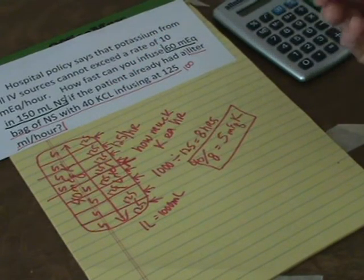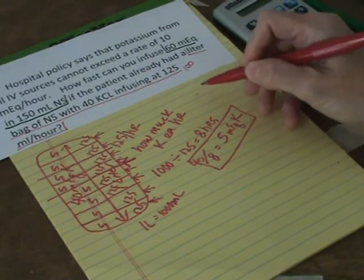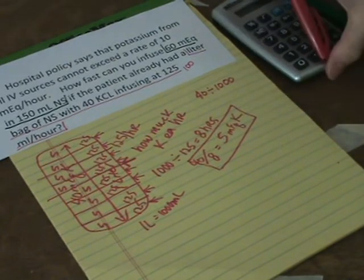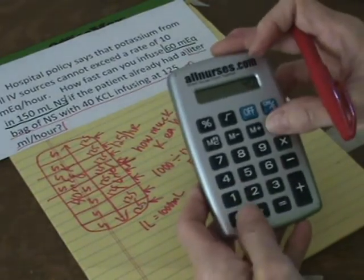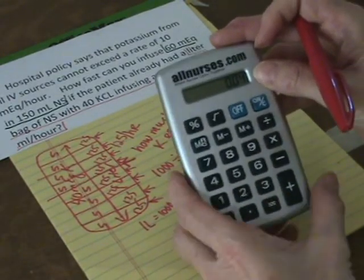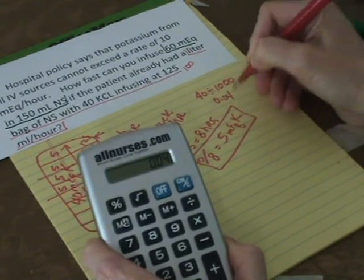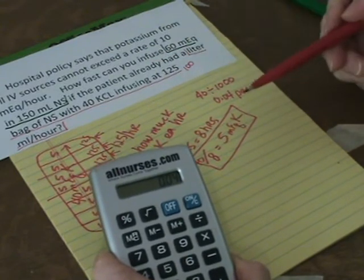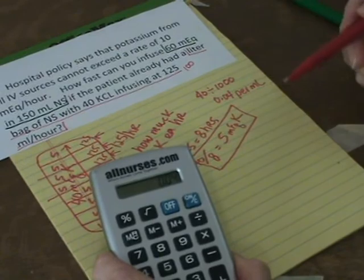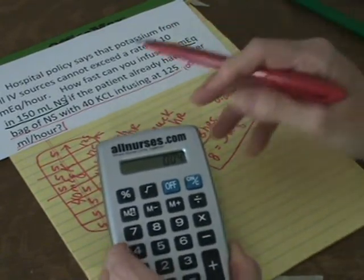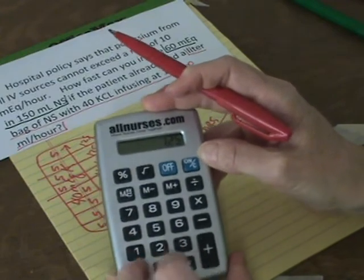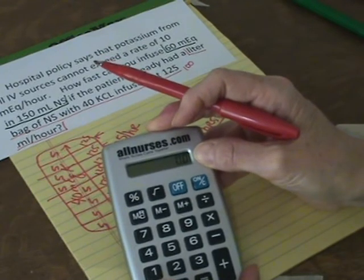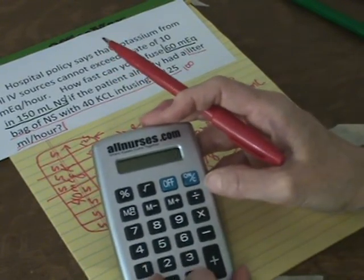Right? You could also say, like I mentioned, you could say, well, 40 divided by 1000. You know, if there's 40 and 1000, 40 divided by 1000. Then there is 0.04 per mil. And however many mils a patient is getting in an hour is how much potassium they're getting. So if they're getting 125 an hour times 125, sure enough, that's 5. If they're getting 100 an hour, then it's 0.04 times 100 is 4.